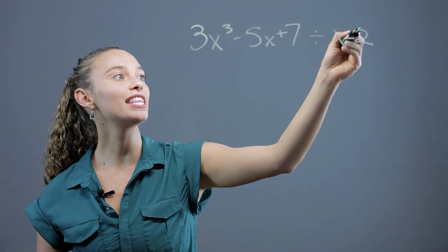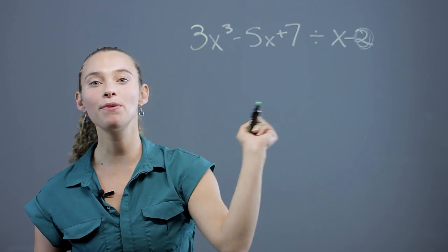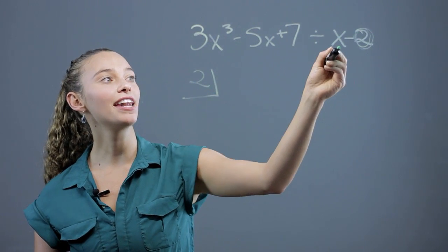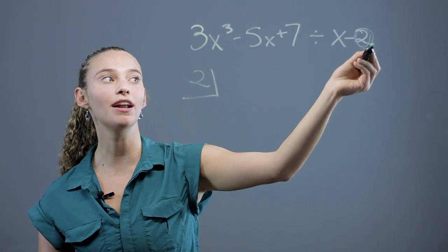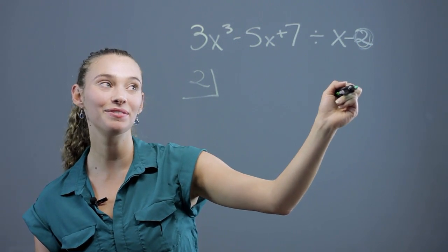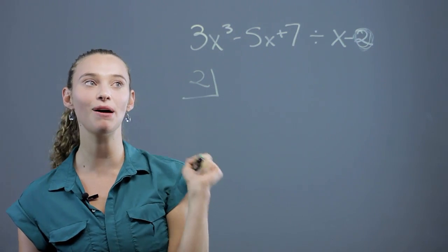All we do is we take this number, x minus whatever that number is, and we put it in a box. So in this case, it's 2. Remember that it's x minus whatever number, so that if it was x plus 2, you'd actually have to use negative 2. But in this case, we're okay because it's subtraction. We can put the 2 in the box.